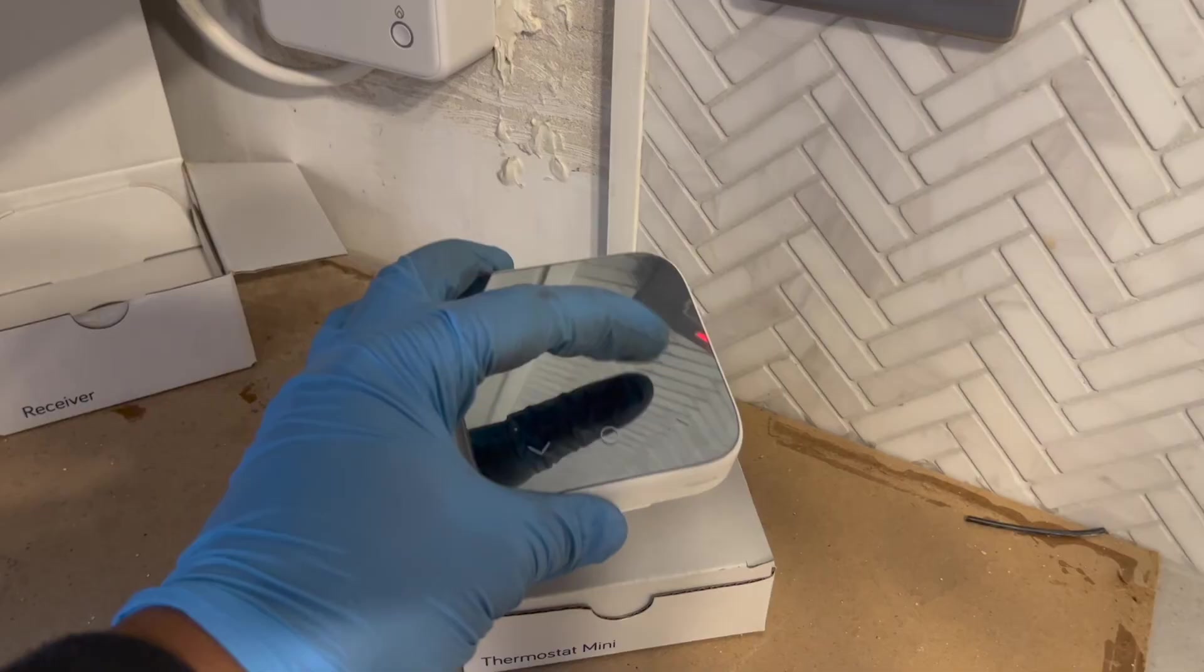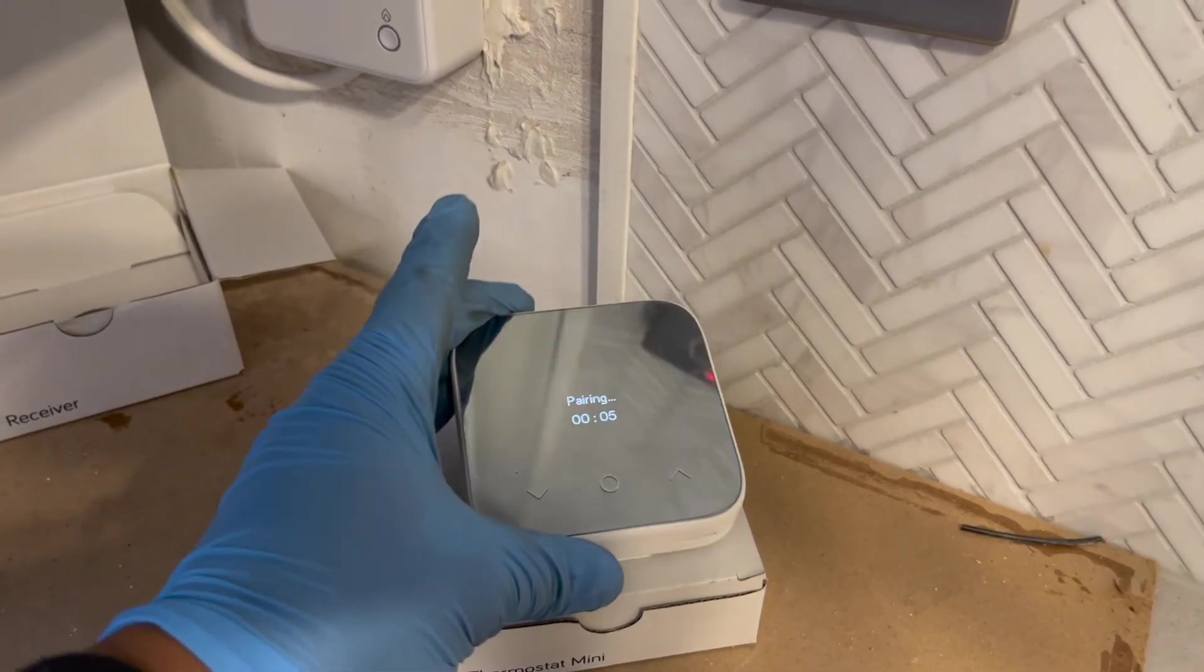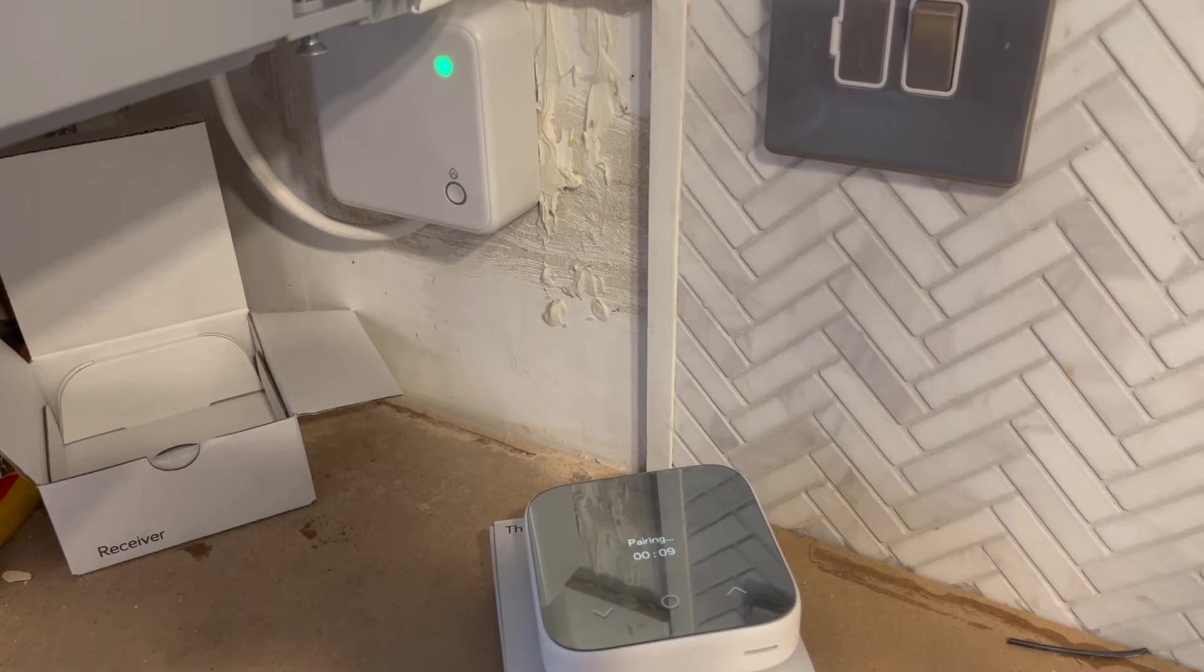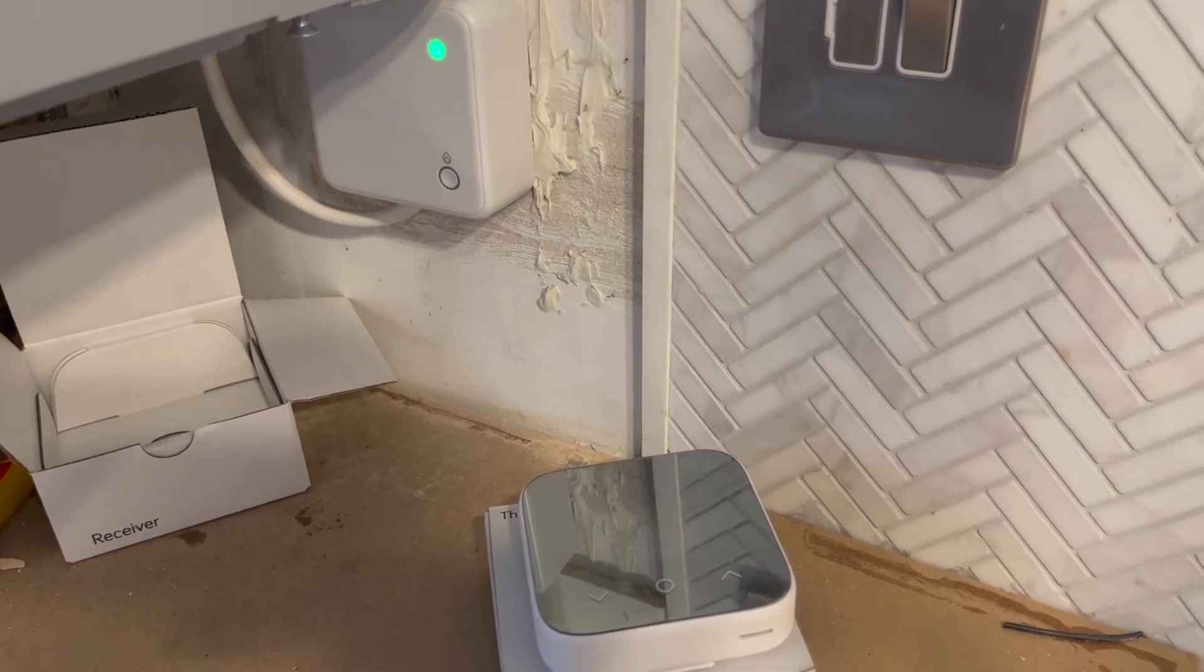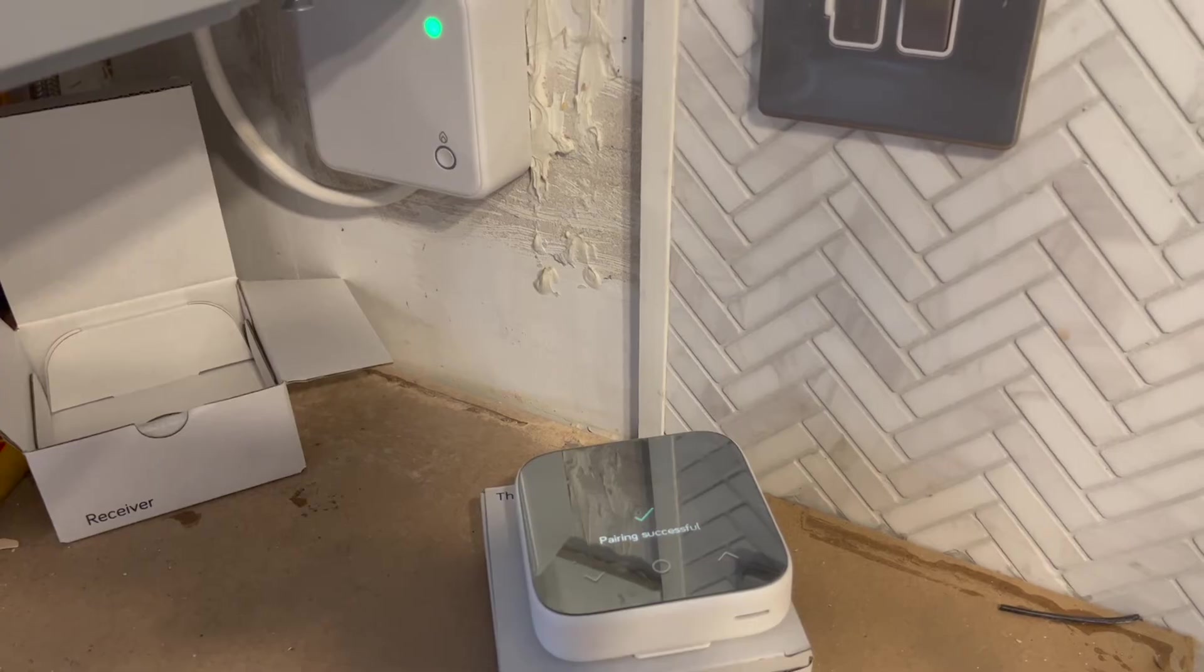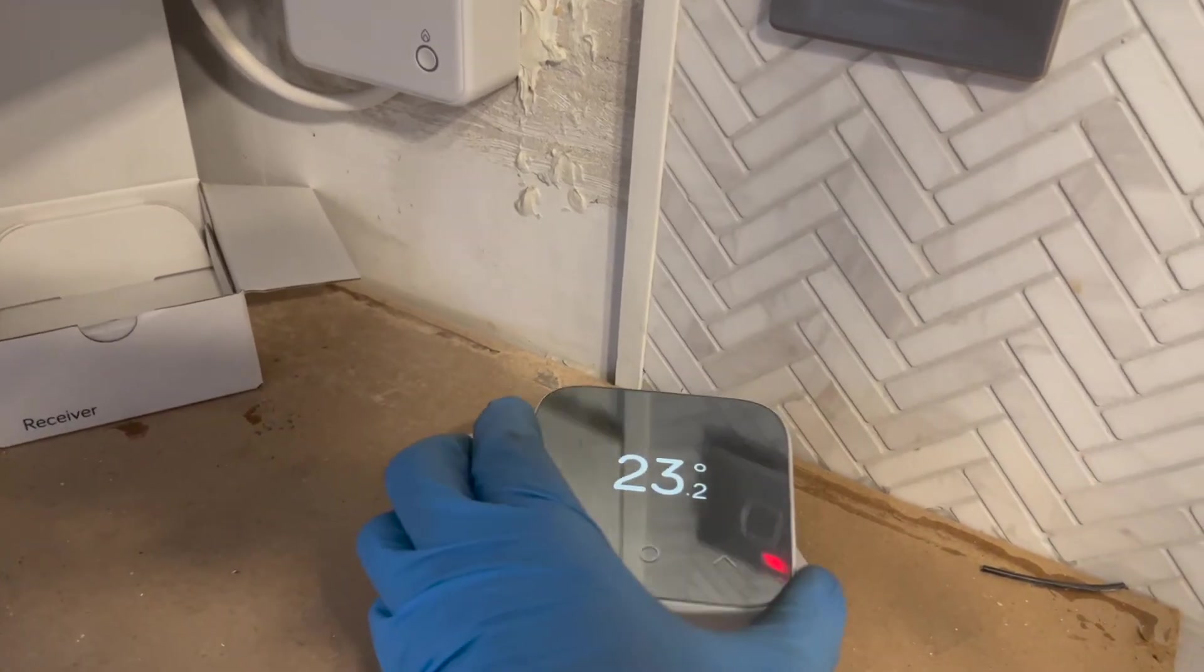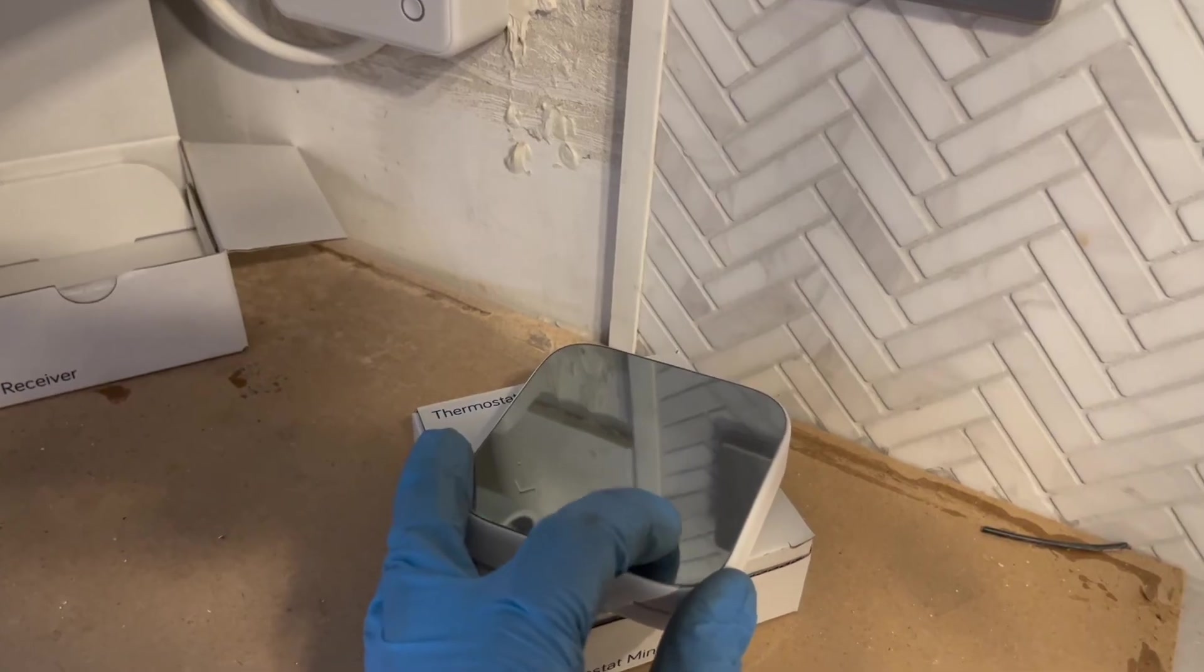That's it, lights come green. Now that should just automatically pair and it's ready to use. There you go, very successful. Then you can use your down up to turn the heat on or off.